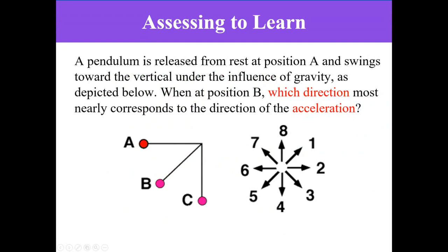A pendulum is released from rest at position A here and swings toward the vertical under the influence of gravity. So the pendulum will be swinging like this back and forth around the central position here. When at position B, which direction most nearly corresponds to the direction of the acceleration? You are given these eight numbers to use in your answer.